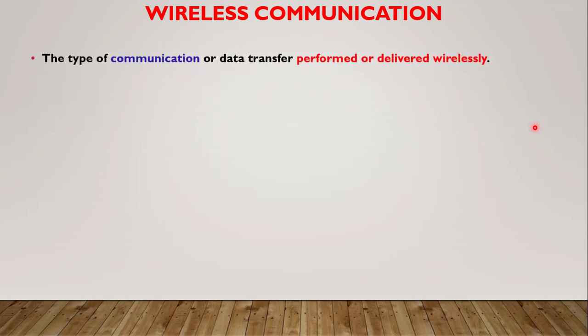What is wireless communication? It is a type of communication or data transfer that is performed wirelessly — that is, you transfer data from one point to another point without using wires. That is called wireless communication.